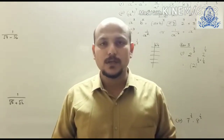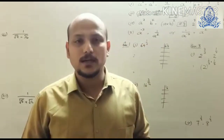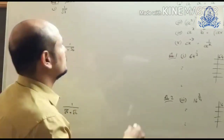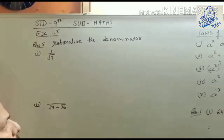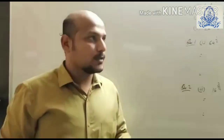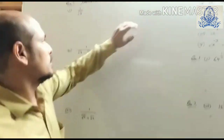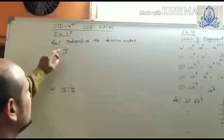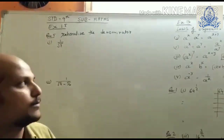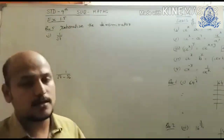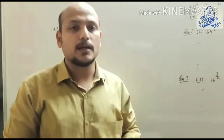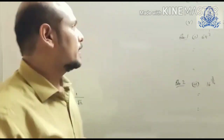Hi friends, today we are going to learn a new method: rationalize the denominator. What is meant by rationalize? You know what a denominator is — the number below the line. Rationalize means converting a number to one that has a proper, rational value.